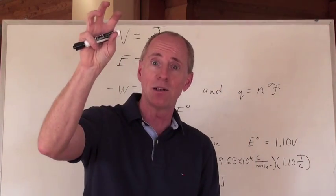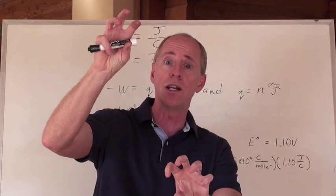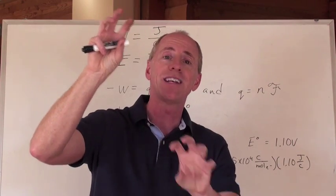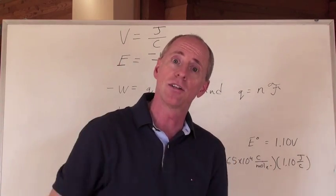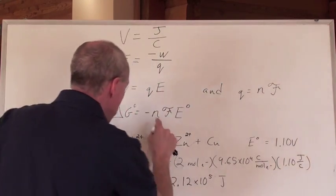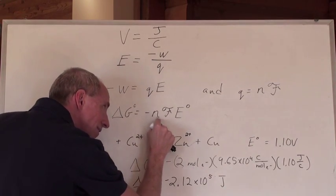If it was 3 electrons in one half reaction and 2 in another, you know that you'd have to have 6 electrons exchanged. Multiply the 1 by 3 by 2 and the 1 by 2 by 3 to get 6 electrons exchanged. The number of moles of electrons exchanged that you put in there for N would be 6.